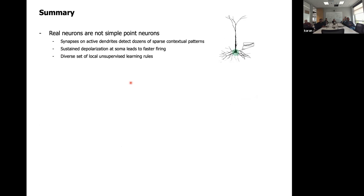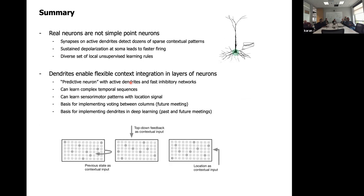Quick summary: real neurons are not simple point neurons. Synapses on active dendrites detect dozens of sparse contextual patterns. Sustained depolarization at the soma leads to faster firing. There's a diverse set of local unsupervised learning rules that are also present in biology. When you model this, dendrites enable a very flexible context integration capability in layers of neurons. Active dendrites with fast inhibitory networks can lead to learning of complex temporal sequences, sensory-motor patterns with a location signal, and voting between columns.